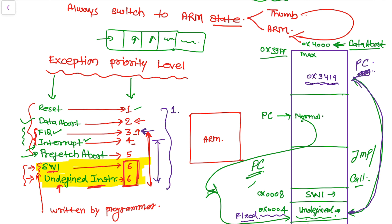The Software Interrupt (SWI) exception occurs when SWI instructions are executed. This exception is programmable — the programmer can write this instruction in the program and raise an exception themselves. The SWI is widely used in operating system task management. The Undefined Instruction exception occurs when an instruction not in the ARM or Thumb instruction set is encountered.